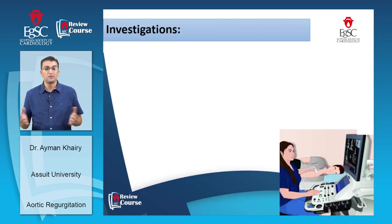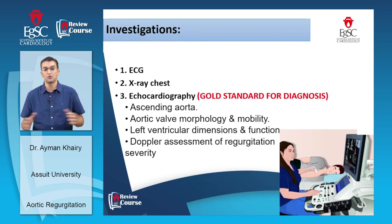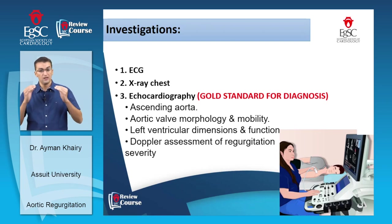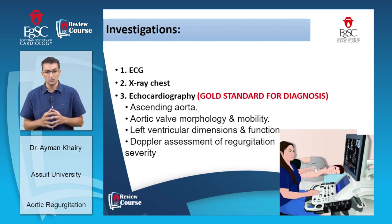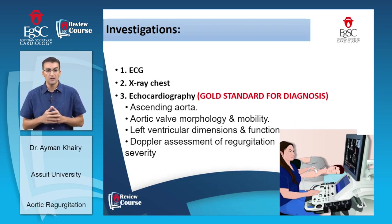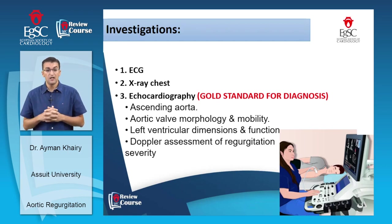How to diagnose chronic aortic regurgitation: ECG and chest X-ray are performed, but echocardiography is the gold standard. Echo must assess the ascending aorta, aortic valve morphology and mobility, left ventricular dimensions and function, and Doppler assessment of regurgitation severity. The ECG classically shows left ventricular hypertrophy with strain pattern, left atrial enlargement, and left axis deviation. Chest X-ray shows cardiomegaly with a downward-displaced LV apex and double contour of left atrial enlargement.